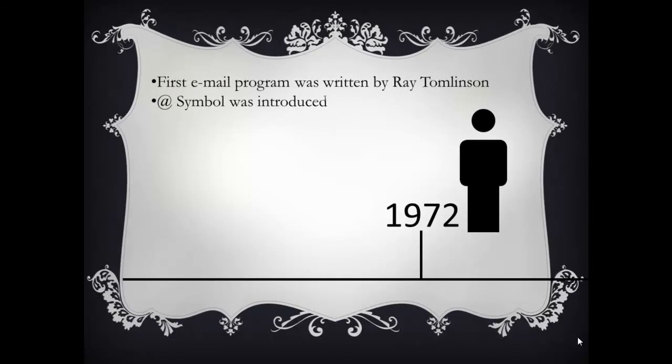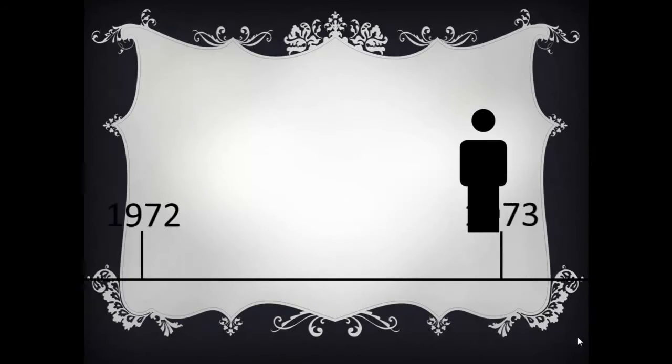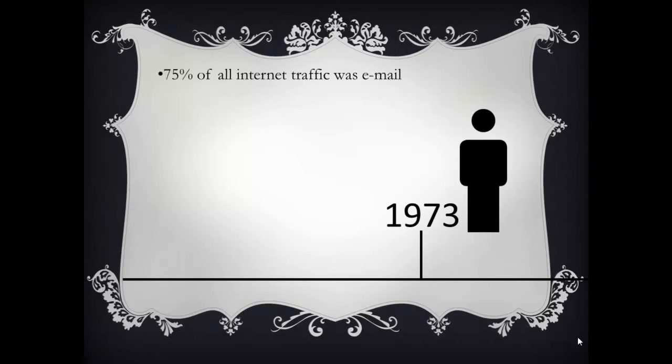In October 1969, the first message was sent over ARPANET, and that was just 'login'. In 1972, the first email program was written by Ray Tomlinson. In 1972, the at-rate symbol was introduced. In 1973, 75 percent of all traffic was email. In 1974, the term internet was first used.